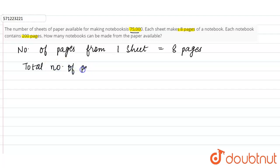So total number of pages that can be made from 75,000 sheets, it is equals to 8 into 75,000, 8 into 75,000, that is equals to 6 lakh. So from 75,000 sheets we can make 6 lakh pages.